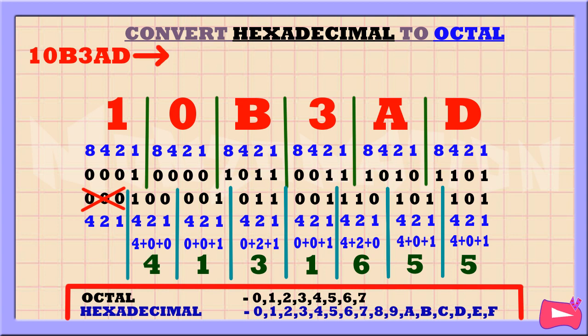So the octal equivalent of 10B3AD is 4131655 base 8. We write a little 8 down here to indicate that this is an octal number, base 8.